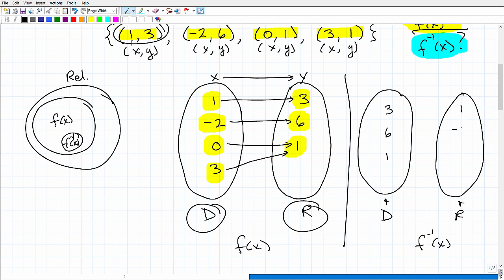And then we're going to make the input values of domain, the range in terms of it being the inverse. So let's go ahead and do that: one, negative two. Let's see here, zero and three. So let's go ahead and just reverse the mapping.